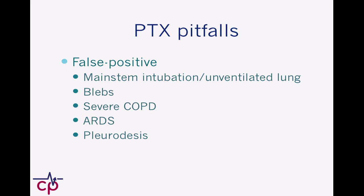By the same token, any sort of structural lung disease or any disease of the pleura is going to give you an abnormal appearance because the pleura is not sliding normally. And so if you've had pleurodesis and the pleural space has been obliterated surgically, then there's no sliding to be seen.